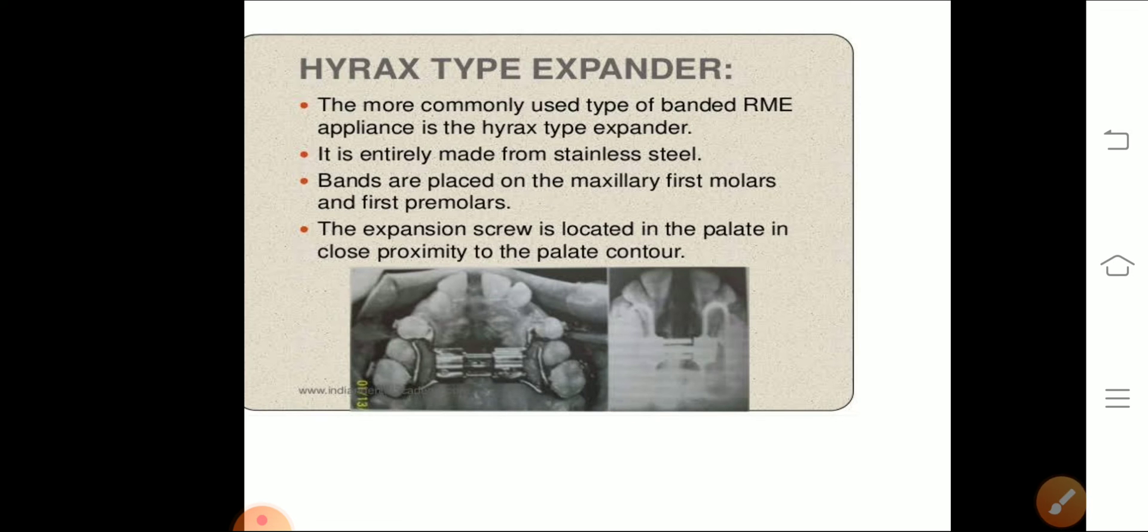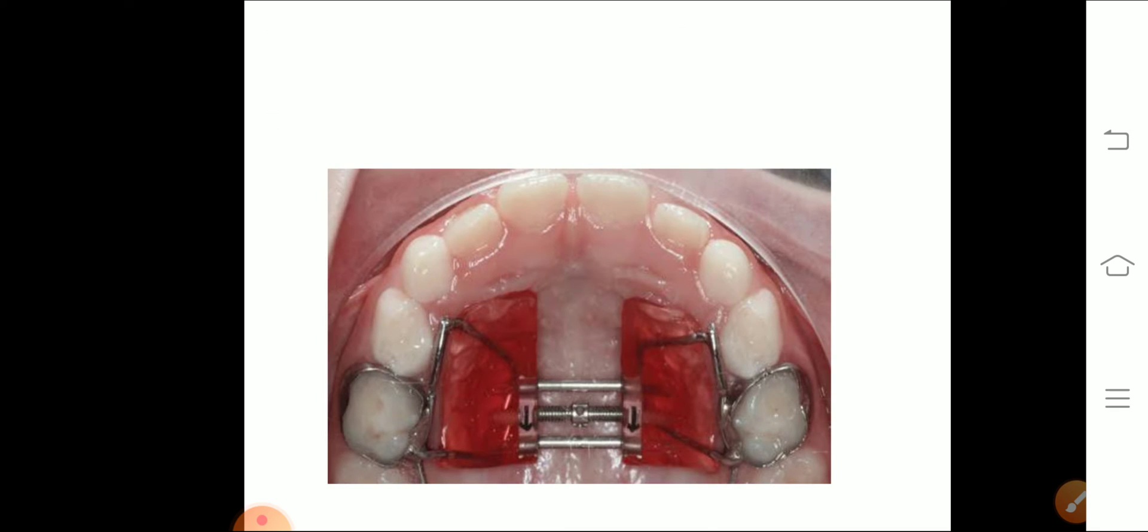Now what is Hyrex? The more commonly used type of banded rapid maxillary expansion is Hyrex. It is basically made up of stainless steel. Bands are placed on maxillary first molar and first premolars. The expansion screw is located in the palate in close proximity to the palate contour. This is representing your Hyrex.